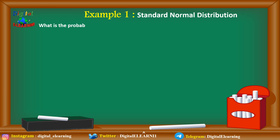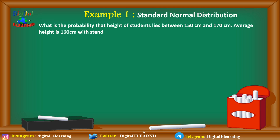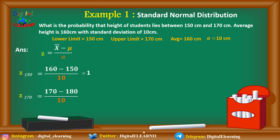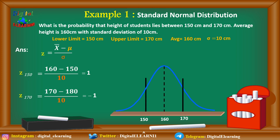Let's take the first example: what is the probability that the height of a student lies between 150 and 170 centimeters, when the average height is 160 with a standard deviation of 10 centimeters? The lower limit is 150, the upper limit is 170, mu is 160, and sigma is 10 centimeters. We apply the standard normal distribution formula and calculate Z at 150 and Z at 170. Then we put the values on the bell curve.